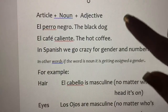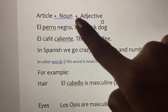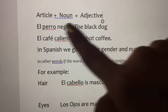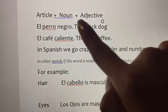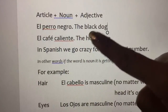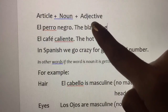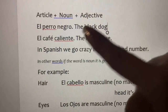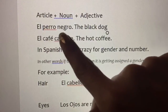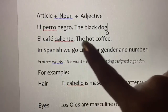There's another thing you need to know, and that's this structure: article, noun, plus adjective. This is the order in which it comes in a Spanish sentence. The article goes first, the noun comes second, and then the adjective. As you get further into your studies, you'll see there are times when you can reverse and put adjective first and noun second, but for now let's stick to article, noun, and adjective. Examples: El perro negro — the black dog. El café caliente — the hot coffee.